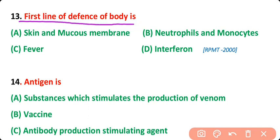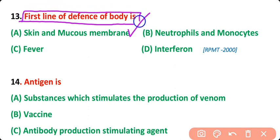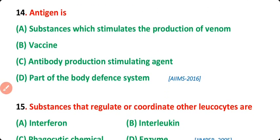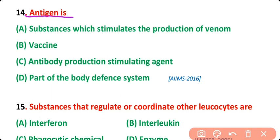Question number 13: The first line of defense of the body is skin and mucous membrane, neutrophils and monocytes, or fever or interferon? The correct answer is option A. Skin and mucous membrane act as the first line of defense of the body against pathogens.